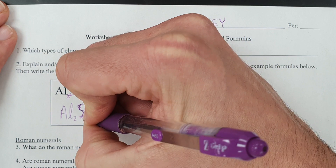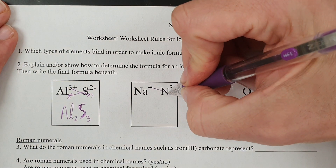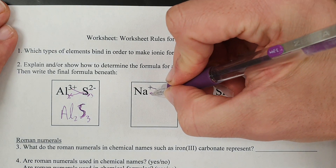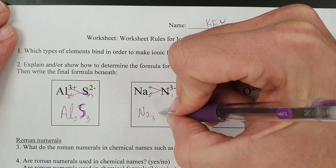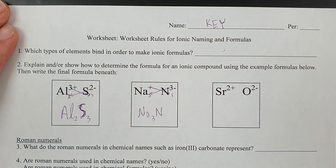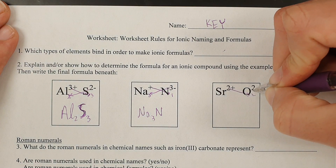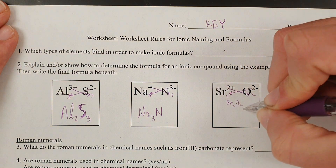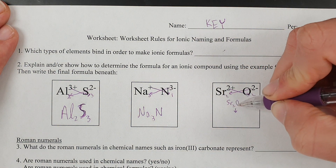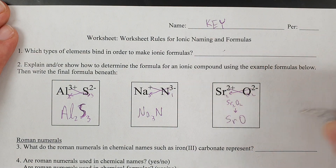There's a sulfur and 3 of them. Same thing here — one of these, three of these, that gives a formula with 3 sodiums and 1 nitrogen. Remember, don't write the 1. If you have this combination, you're going to need two of these and two of these, so SR2O2, which reduces down because that's a 2-to-2 ratio — that becomes a 1-to-1 ratio. So SRO is your final answer.